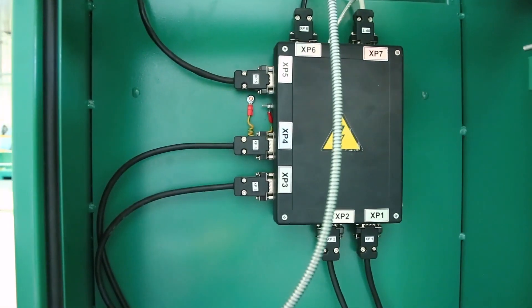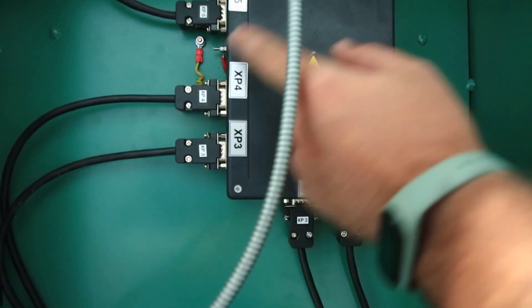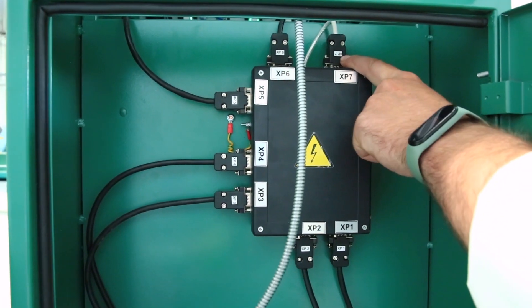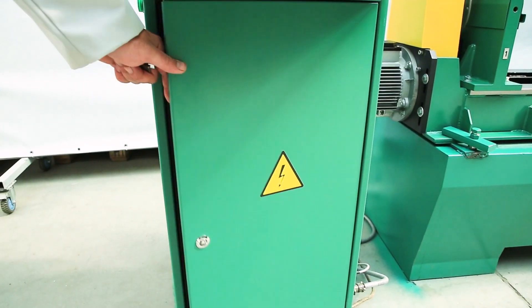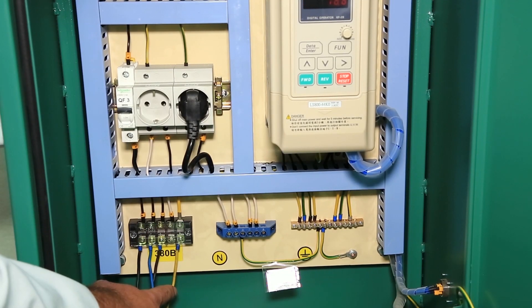After that, the connectors of the first vibration sensor, the second, third, fourth and the cord of the speed sensor are connected. The power connection of the machine is connected on the left side of the electrical cabinet. The power is connected to this box, three phases and ground.